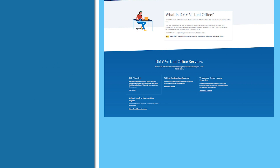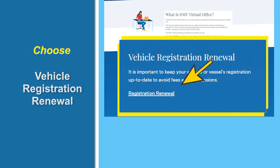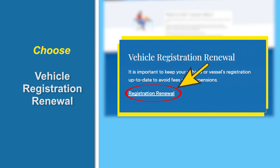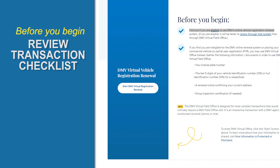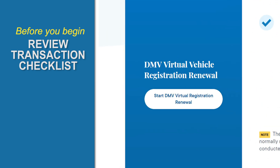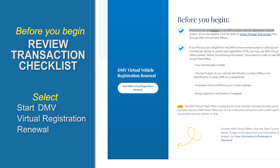In this case, choose Vehicle Registration Renewal. Before you begin your transaction, review the checklist to make sure that you have all of the necessary documents. Then select Start DMV Virtual Registration Renewal. You'll find the button on the left side of the screen.